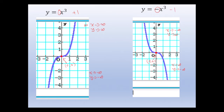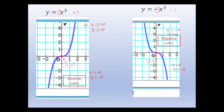The coefficient of x cubed in y equals x cubed is plus 1, and in y equals minus x cubed it is minus 1. These are associated with the shape of the curve. A positive leading coefficient gives a positive cubic shape, and a negative leading coefficient gives a negative cubic shape.